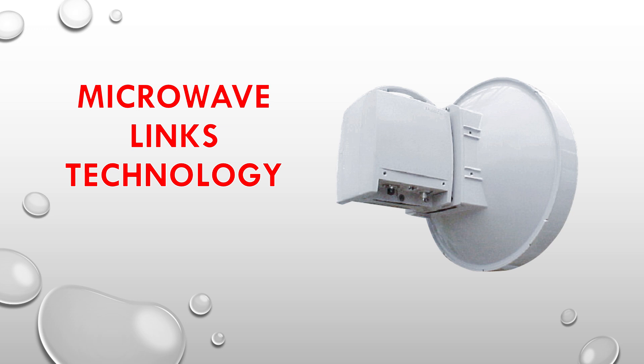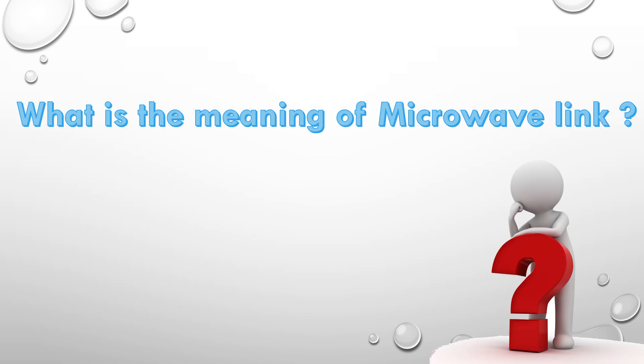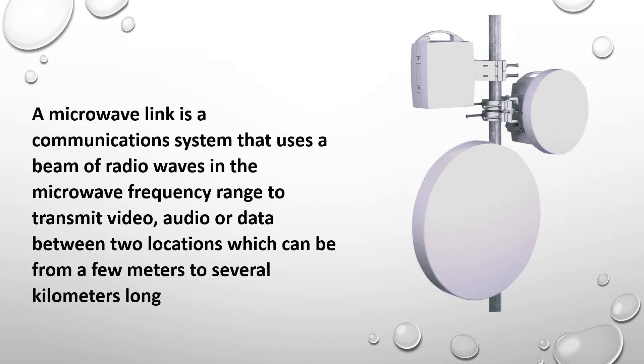Hello everyone. In this video I'm going to talk about microwave links technology and their different types. The video is important for fresh graduates or for anyone who needs basic information for any interview. First, we should know what is the meaning of a microwave link. A microwave link is a communication system that uses a beam of radio waves in the microwave frequency range to transmit video, audio, or data between two locations, which can be from a few meters to several kilometers long.